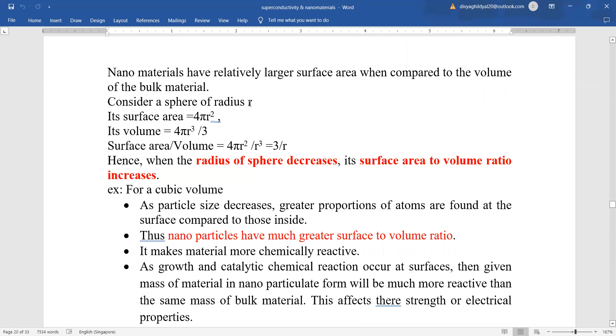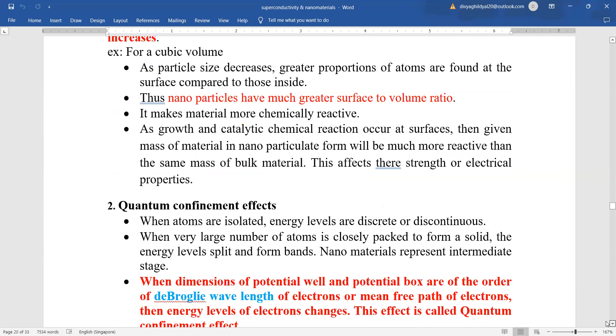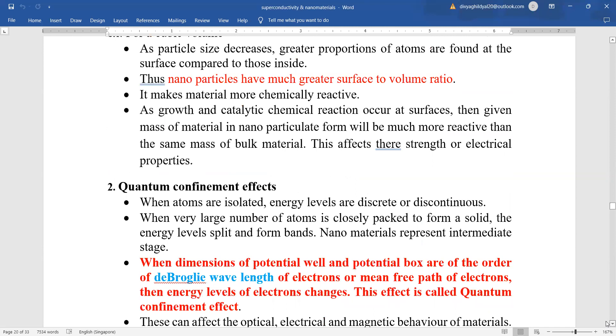Suppose you take a sphere. In science, we know that sphere has the smallest area. Then, its area is 4πr², volume is 4/3 πr³. The ratio of surface area to volume comes out as 3/r, where r is radius of sphere. When radius of the sphere decreases, its surface area to volume ratio increases. As particle size decreases, greater proportions of atoms are found at the surface compared to those inside. Thus, nanoparticles have greater surface to volume ratio. It makes the material more chemically reactive. As growth and catalytic chemical reactions occur at surfaces, these effects strengthen the electrical properties.